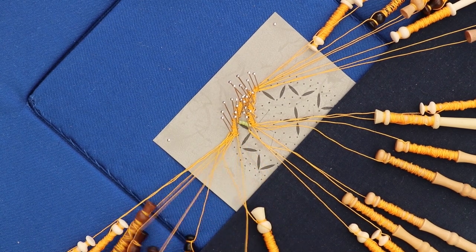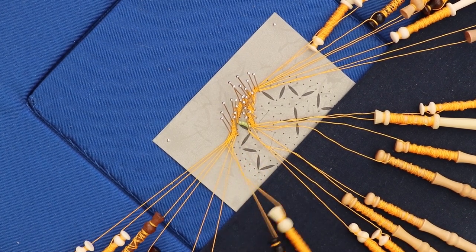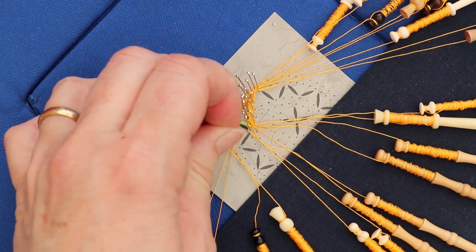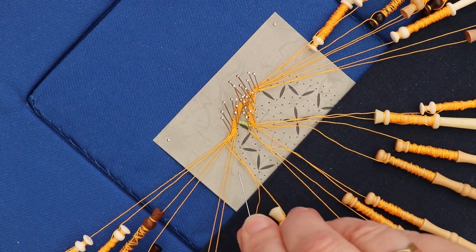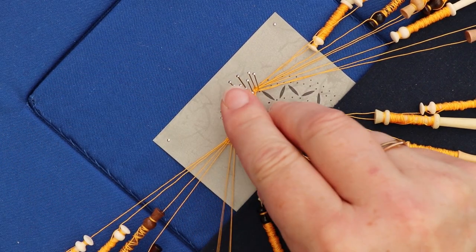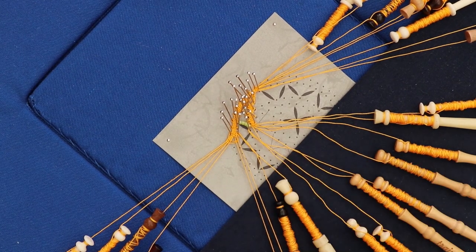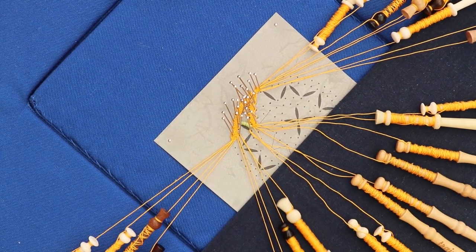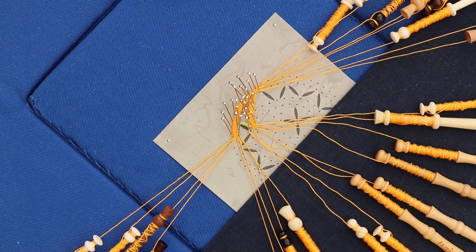I put the twists on, I take that pin out completely and just put it under the workers again. Now when I come to tension it, if I hold this first passive and pull it up, it pulls the loop in but doesn't distort the trail.